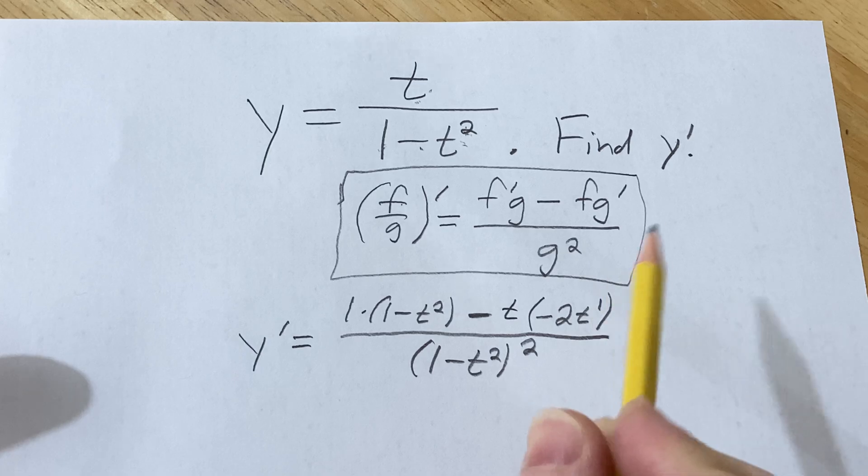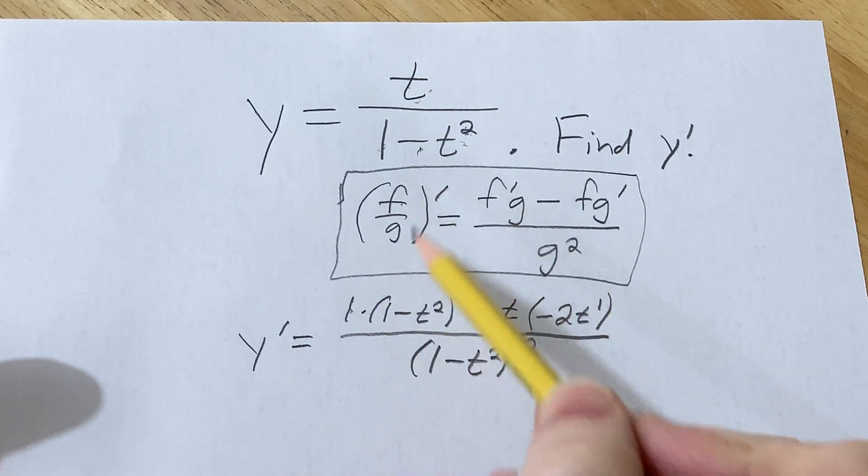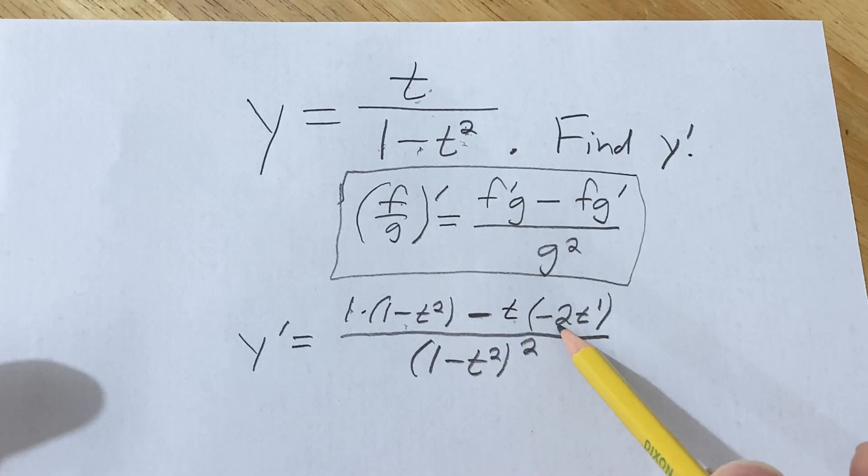Let's just check our work one more time. It's the derivative of the top, which is 1, times the bottom minus the top, times the derivative of the bottom, all over the bottom one squared.